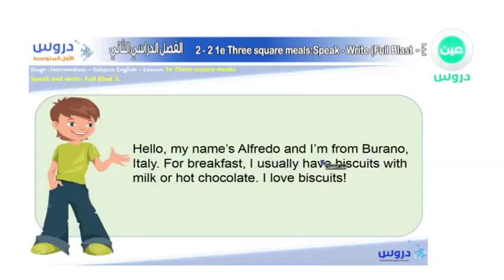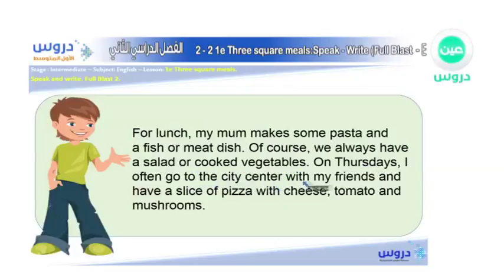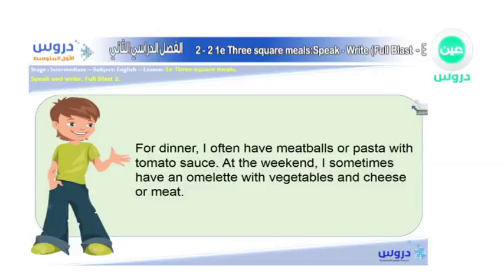Hello, my name is Alfredo, and I'm from Burano, Italy. For breakfast, I usually have biscuits with milk or hot chocolate. I love biscuits. For lunch, my mom makes some pasta and a fish or meat dish. Of course, we always have a salad or cooked vegetables. On Thursdays, I often go to the city center with my friends and have a slice of pizza with cheese, tomato, and mushrooms. For dinner, I often have meatballs or pasta with tomato sauce. At the weekend, I sometimes have an omelet with vegetables and cheese or meat.